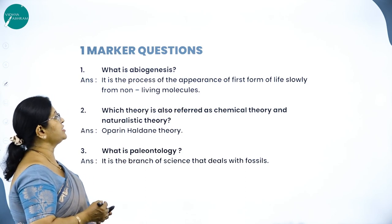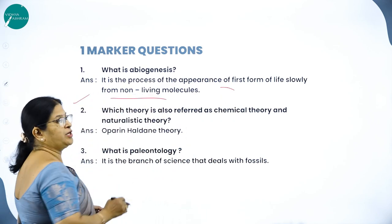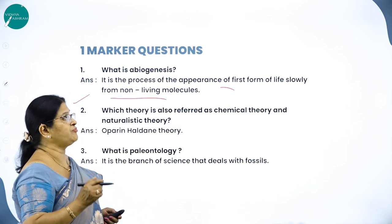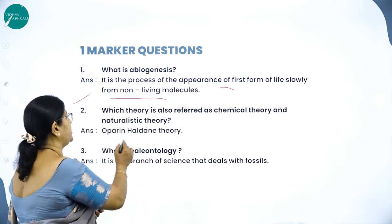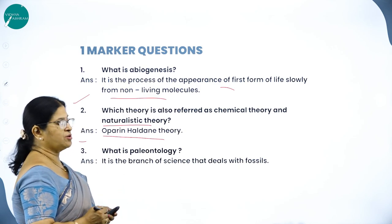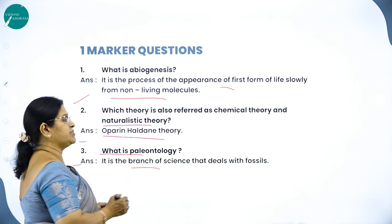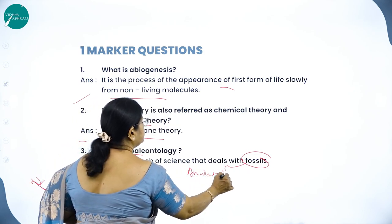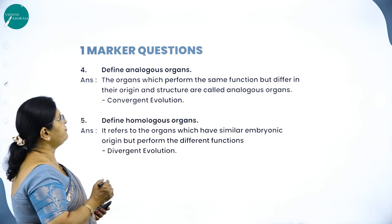One-marker question: What is abiogenesis? Abiogenesis is the process of appearance of first forms of life slowly from non-living molecules. It states that life comes from non-living things and is also referred to as the chemical theory or naturalistic theory. What is paleontology? Paleontology is a branch of science that deals with the study of fossils. A fossil is an ancient remain.